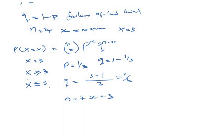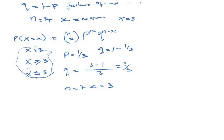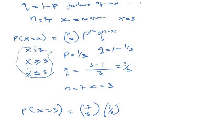Don't forget this condition — you might be given a different question. I recommend watching our next video where we resolve questions on 'at least' and 'at most.' For now, we have exactly three times. So p of X equals three is: seven combination three, multiplied by success (one over three) raised to the power of three, multiplied by failure (two over three) raised to the power of n minus x, which is seven minus three equals four.